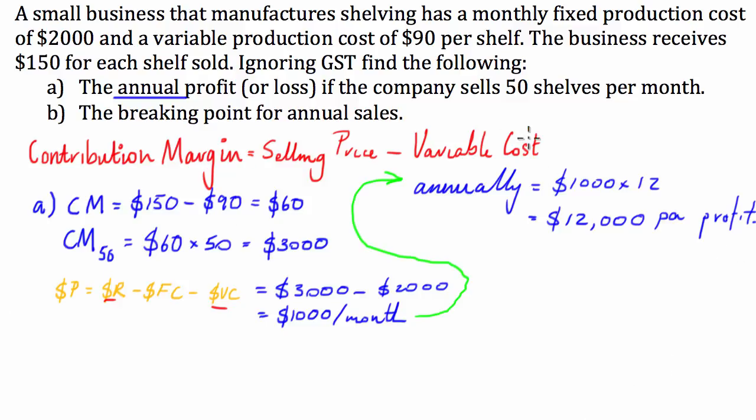Cool. So, let's get on to part B. The breaking point, or this is supposed to say, sorry guys, I'm going to do a bit of editing. This is supposed to say the break-even. That's a bit of a derp mistake on my behalf, sorry about that. The break-even point for annual sales.